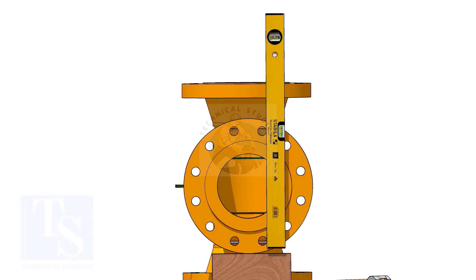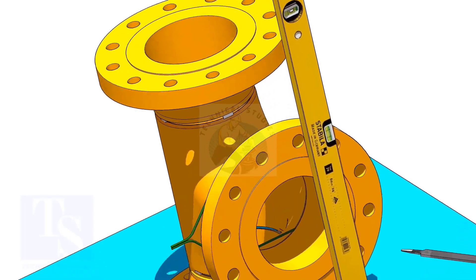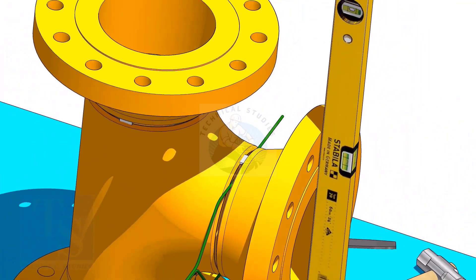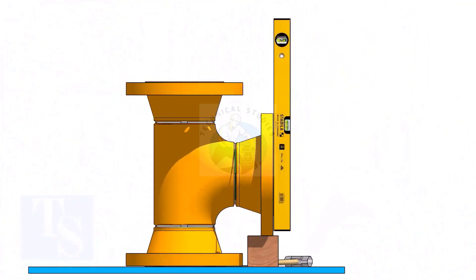Correct the plumbness of the flange holes, as shown. Tack weld on the top side. Correct the flange vertically, and tack weld below.